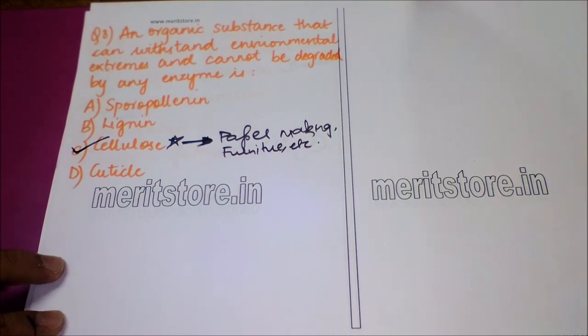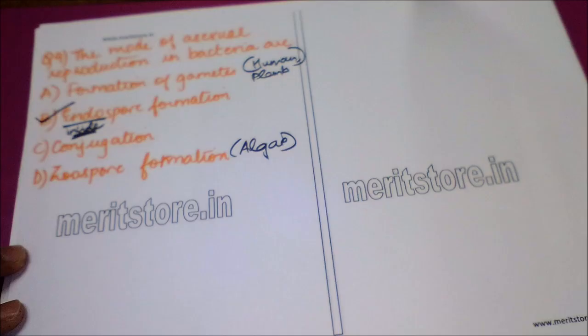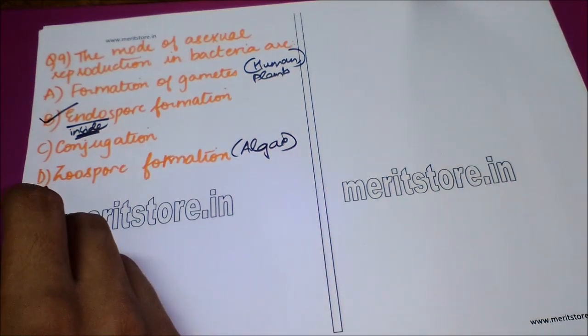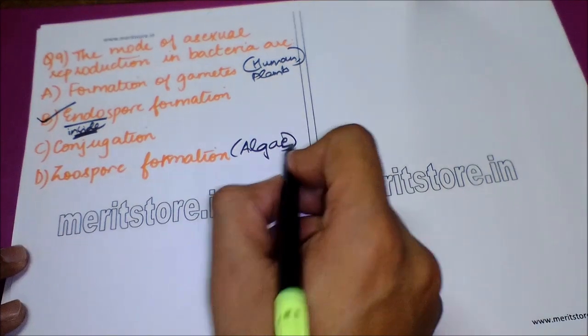The next question is: what is the mode of asexual reproduction in bacteria? Option A: formation of gametes. Option B: endospore formation. Option C: conjugation. Option D: zoospore formation. The answer is option B — endospore formation — which are spores formed inside the organism. Formation of gametes is exhibited in higher organisms like humans and plants, while zoospore formation is the mode of asexual reproduction seen in algae.